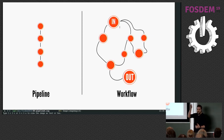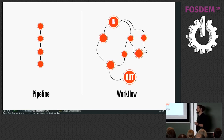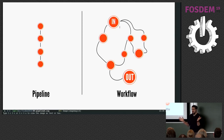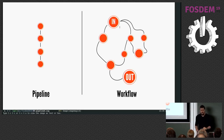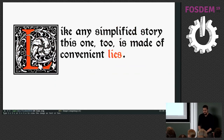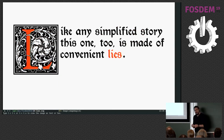Rather than having a linear flow of data that goes in from the left and comes out at the right, you have a graph where information can disperse and seep through, and at the end you filter out something that you're interested in. But like any simplified story, this one too is made up of lies.